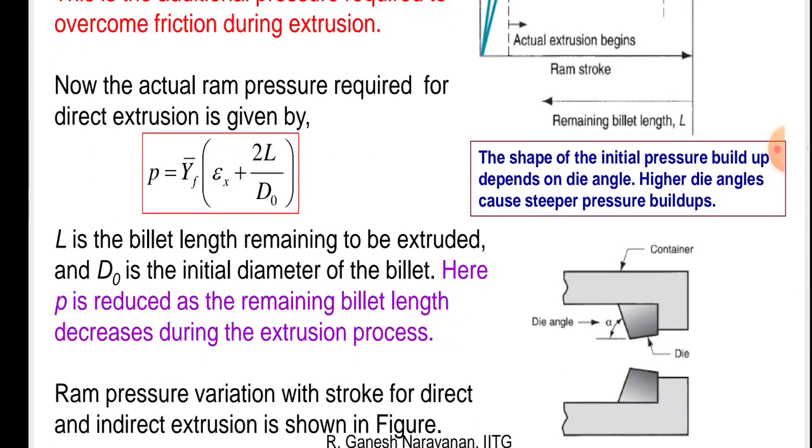L is the billet length remaining to be extruded and D0 is the initial diameter of the billet. Here p is reduced as the remaining billet length decreases during the extrusion process.